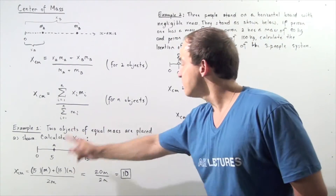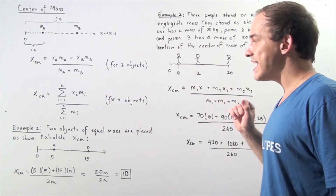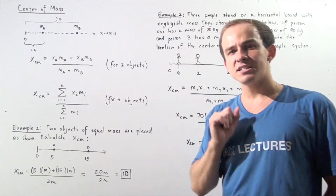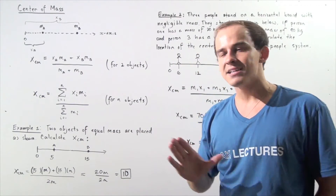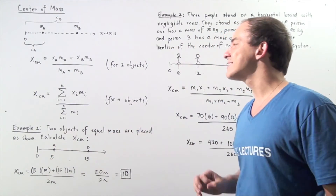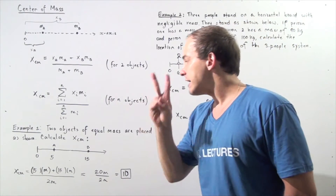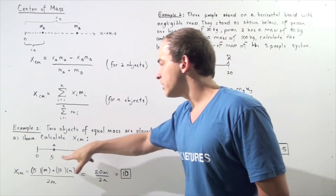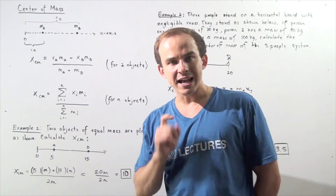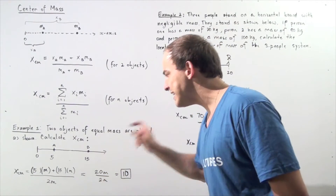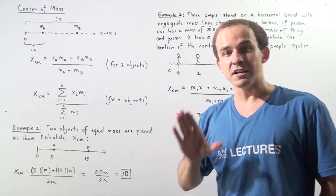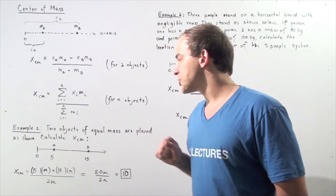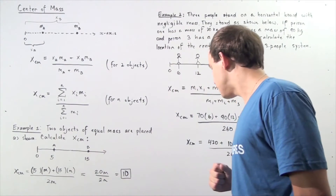Let's use these two formulas in the following two examples. In example one, we have two objects of equal mass M placed along the x-axis. One object is placed five units from the zero mark, and the second object is placed 15 units from the zero mark. We want to calculate the center of mass of this two-object system.